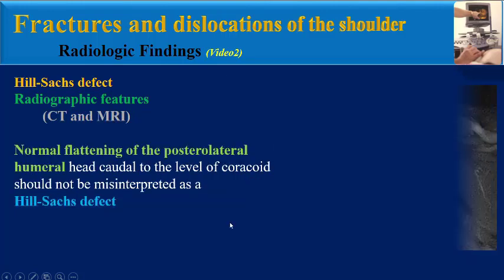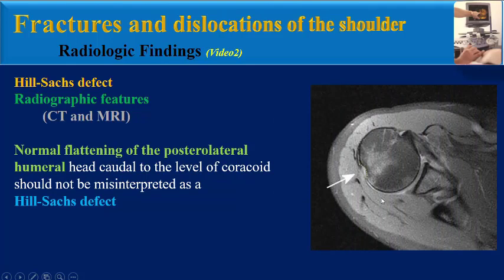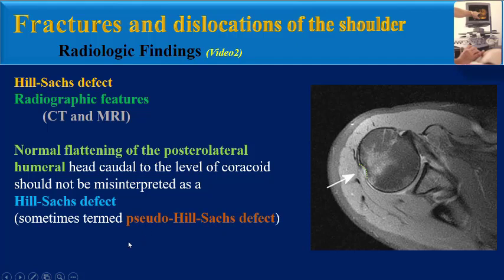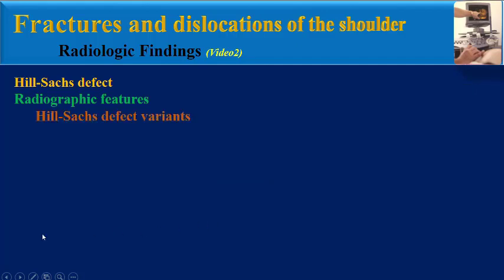Normal flattening of the posterior lateral humeral head caudal to the level of the coracoid should not be misinterpreted as a Heel Socks defect, which is sometimes termed a pseudo-Heel Socks defect. Is there any variance for Heel Socks defect?